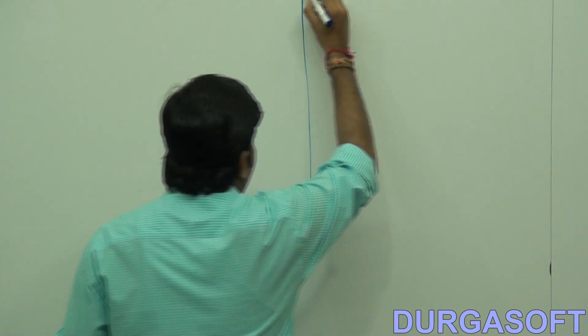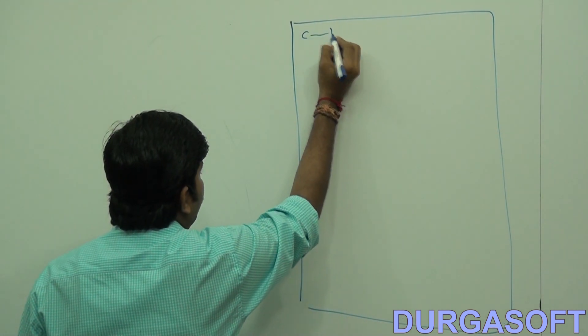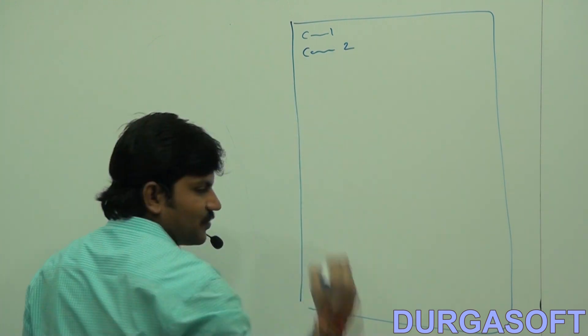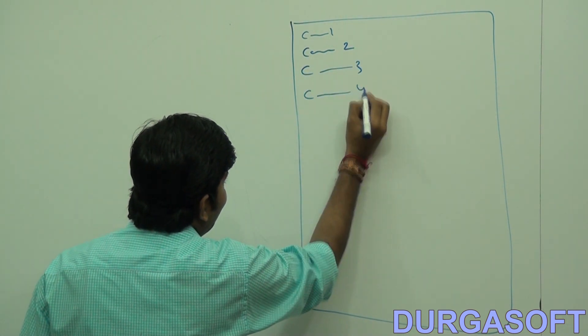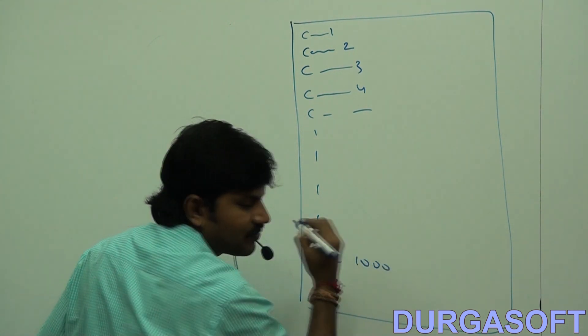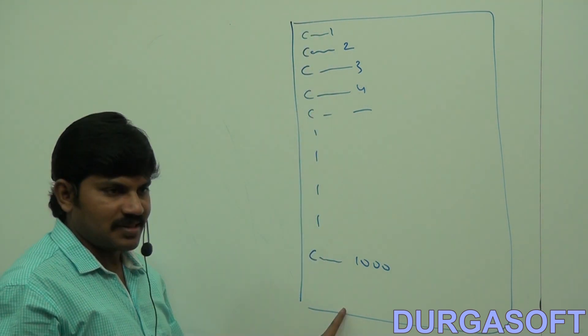Suppose I want to execute a thousand commands. If I do them manually — first command, second command, third command — it takes a long time and requires a dedicated person. Instead, I want to automate. I'll take a normal text file and write command one, command two, command three... up to command thousand. Then I save it as 'abc.bat'. That's a batch file — a group of commands.